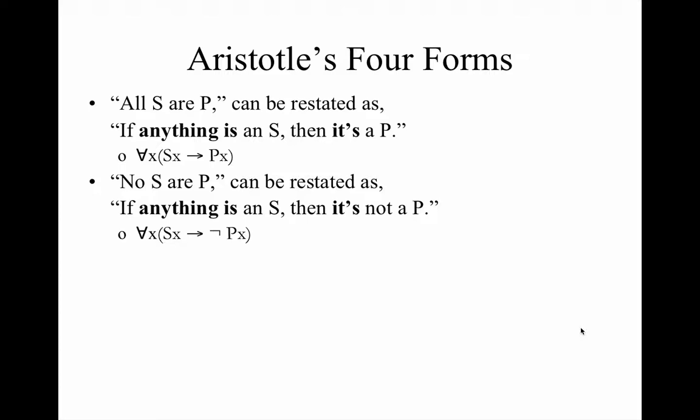These are your standard universal translations. For the universal affirmative, your grammatical subject becomes the subject class — it becomes the antecedent of a conditional claim — and your grammatical predicate becomes the predicate class, the consequent. So we're talking about entities S and entities P: of our domain of discourse, we say S; of our domain of discourse, we say P. Notice also that the universal negative has the negation in front of the consequent predicate.